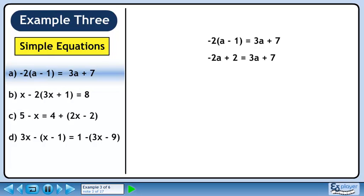Multiply minus 2 through the brackets to get minus 2a plus 2 equals 3a plus 7. Collect terms with a on the left side and constants on the right side.